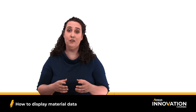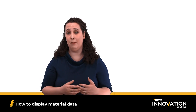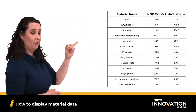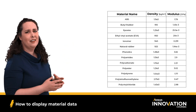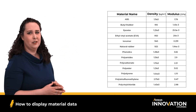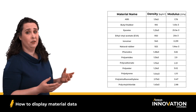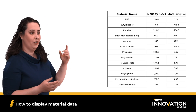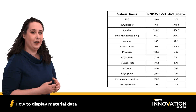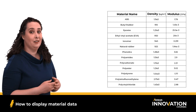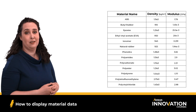Often material data is presented in handbooks and tables, such as the one that you can see here. Now, this is a lot of information to sift through. If I'm trying to compare two materials together and they're not next to each other in this table, I'm probably going to have to export this data to some sort of spreadsheet software in order to begin to make sense of it.